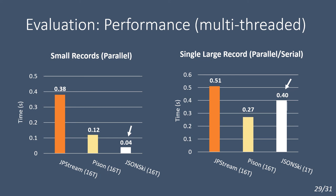In general, all three methods scale well for small records. For a single large record, some prior works like JPStream and PISON support speculative execution, while JSON-Ski currently doesn't have this feature. The results show that single-threaded JSON-Ski still runs faster than JPStream with 16 threads, while running around 1.5 times slower than PISON with 16 threads.